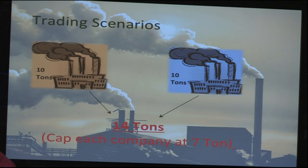Here we have two factories originally producing 20 tons of a certain pollutant. A cap-and-trade system is implemented with a cap set at 7 tons per company. The government's goal is to decrease emissions from 20 tons to 14 tons. In the first scenario, both companies decrease their emissions by 3 tons each with no extensive effort or capital required — both successfully remain below the cap. However, this ideal scenario might not always happen.